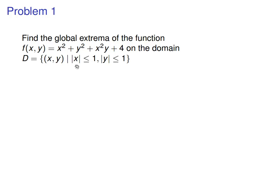all points x, y, whose absolute value of the x-coordinate is less than or equal to 1, and the same for the y-coordinate. So with any global extrema problem, there are going to be three steps.